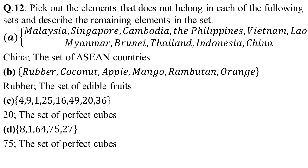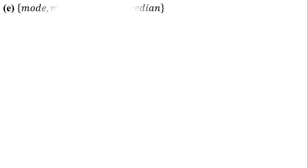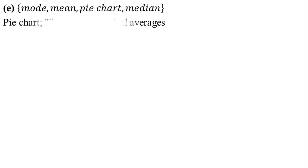In part E, the set contains: mode, mean, pie chart, and median. Pie chart is a different type of word here. So except pie chart, the remaining set is the set of statistical averages.